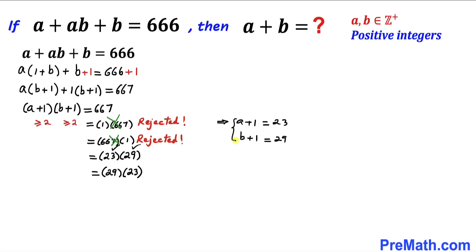The second possibility is a plus 1 taking the value 29 and b plus 1 taking the value 23.